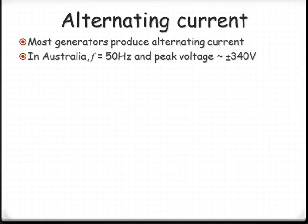But we call this 240 volts. So how can we be peaking at 340 if we're running on 240 AC?